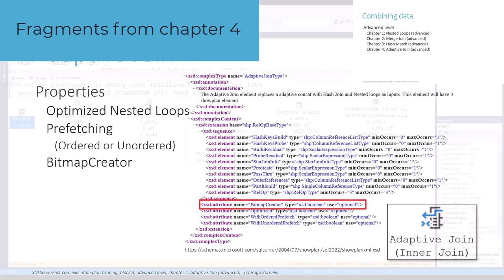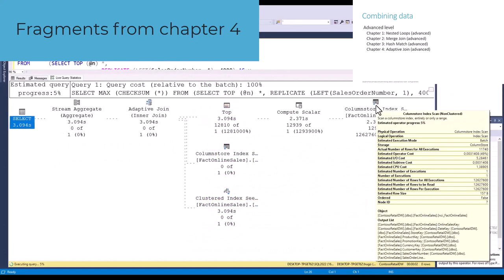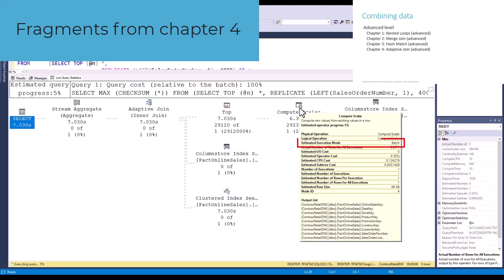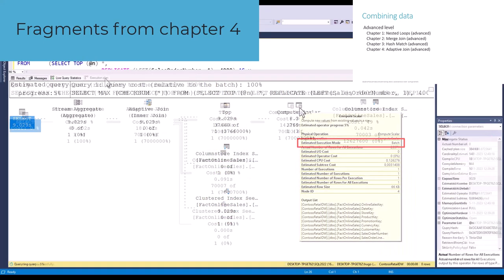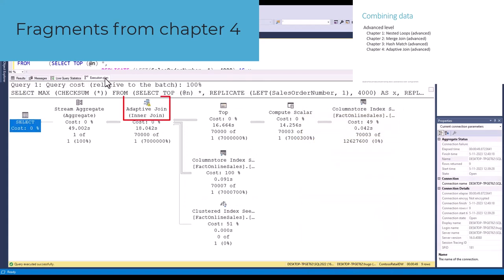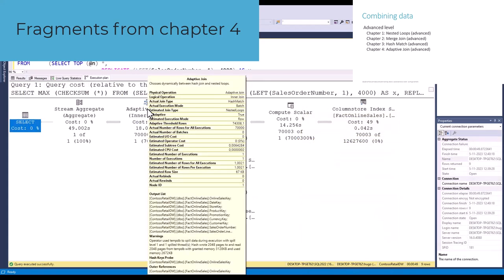Just as hash match, an adaptive join may run out of memory, in which case it has to spill. When this happens, the operator never chooses the nested loops algorithm, even when the number of rows indicates it should.